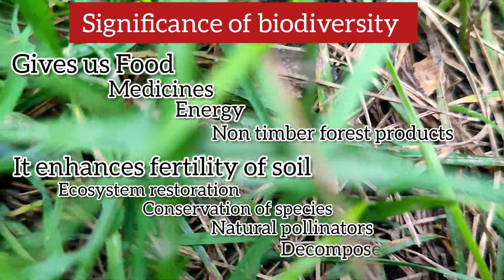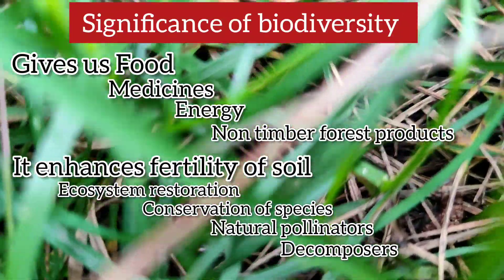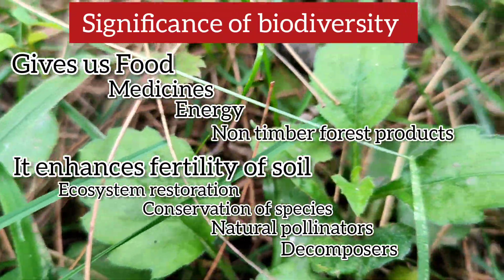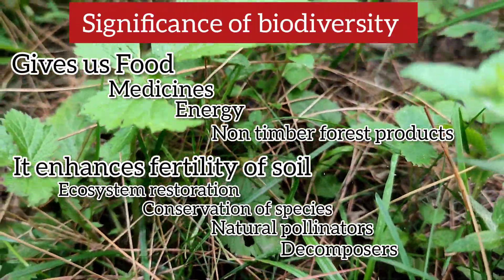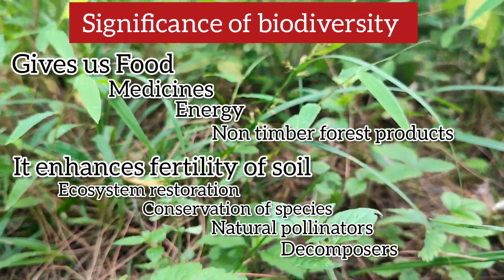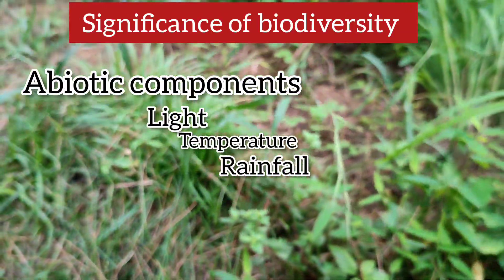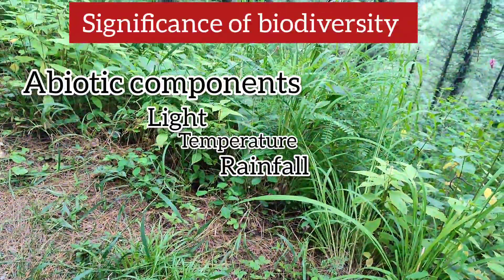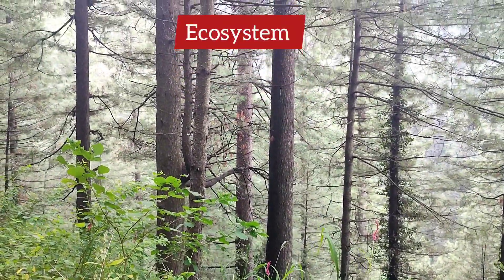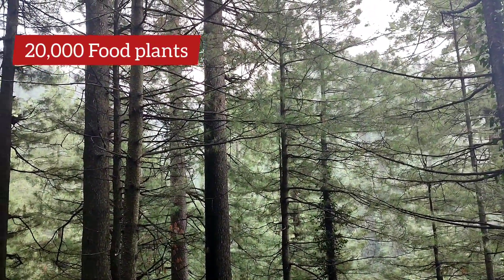Decomposers play an important role in mineralization and humification. Insects play an important role in pollination for crop diversity and food security. We also get meat and milk from livestock, fish, and mammals. Medicinal plants give us a number of natural compounds used for health security. Abiotic components such as light, temperature, and rainfall also play important roles for biodiversity significance. Biodiversity provides numerous non-timber forest products, and plants provide us with oxygen. In the world, there are about twenty thousand plant species used as food plants.